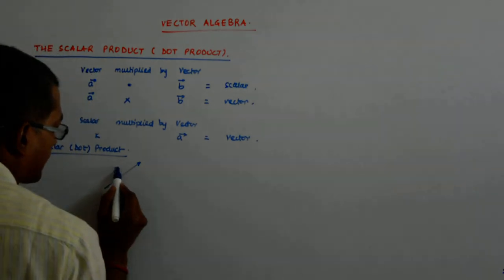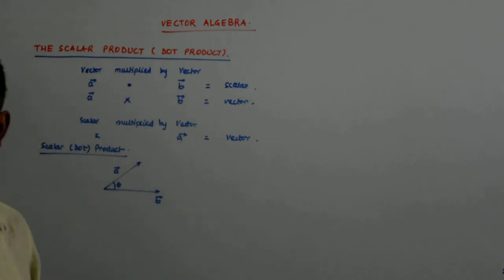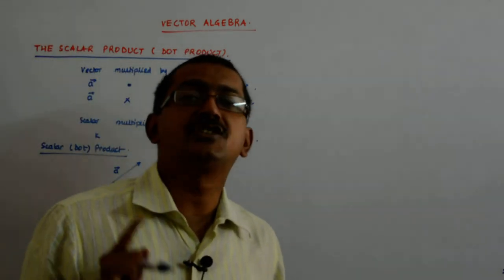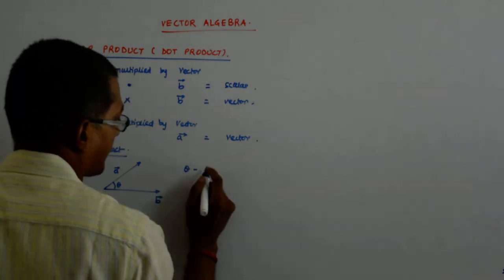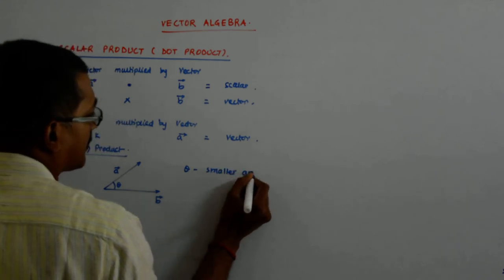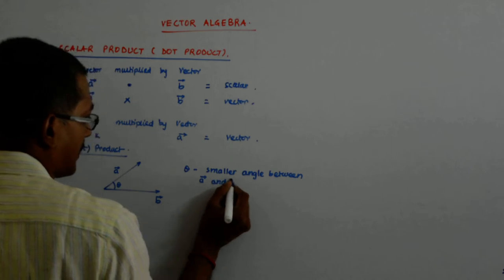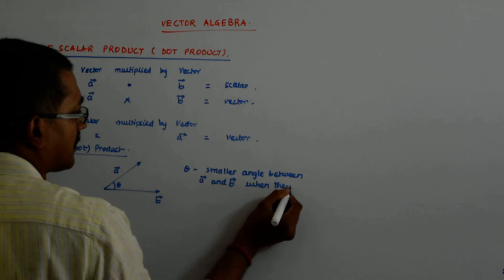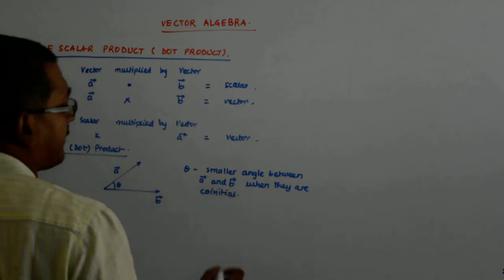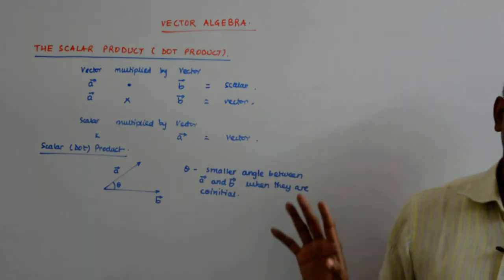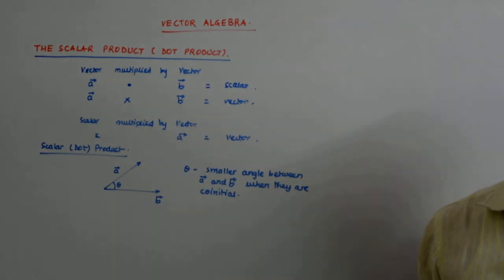If you have a vector a and a vector b and the angle between them is theta, when they are co-initial, smaller angle between a and b when they are co-initial, this is a very very important thing. Otherwise, the whole thing will fall down. So, if they are not co-initial, you make them co-initial. How do you make them co-initial?